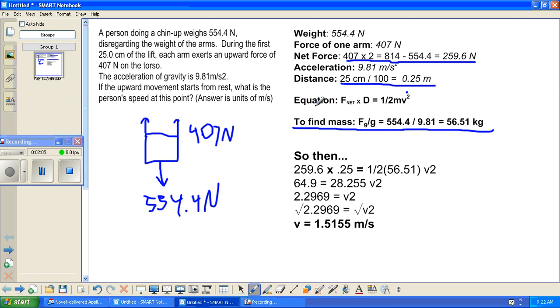So, we plug in, we use our equation of net force times distance equals one-half m times v squared, and we plug in all our numbers. So, we have 259.6, which is our net force, times 0.25 meters, which is our distance.